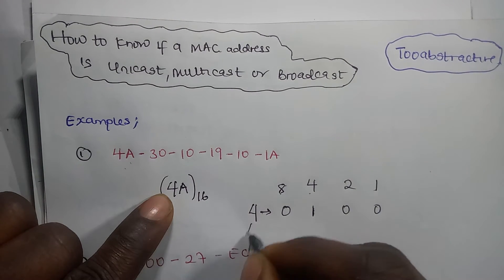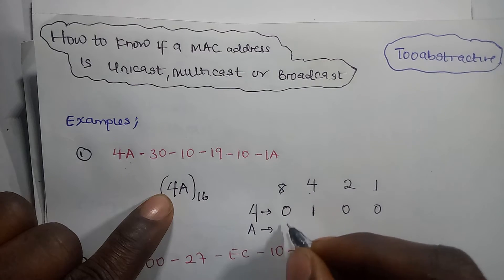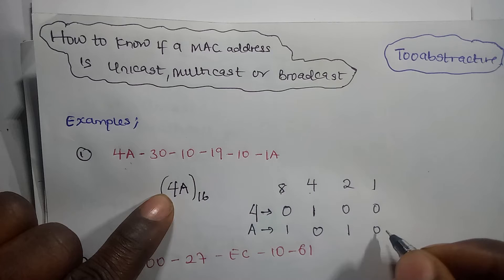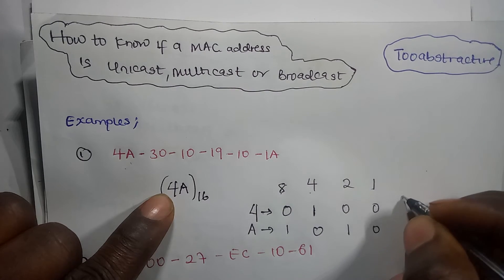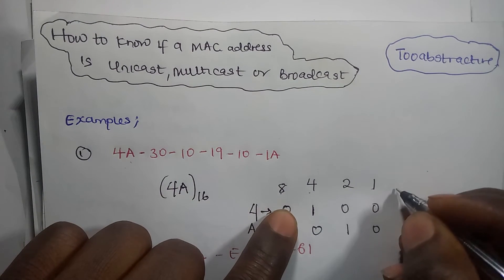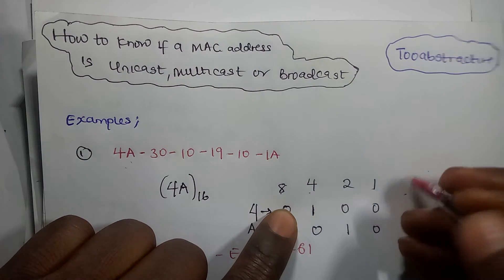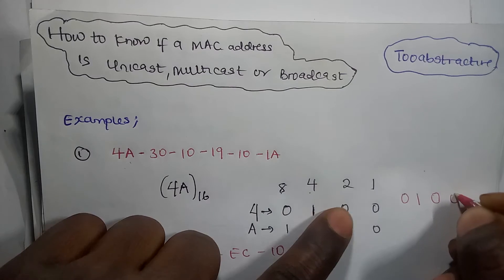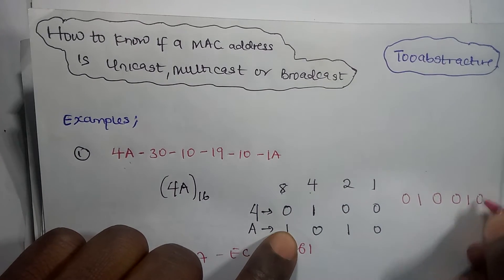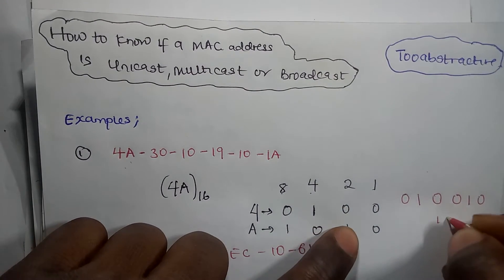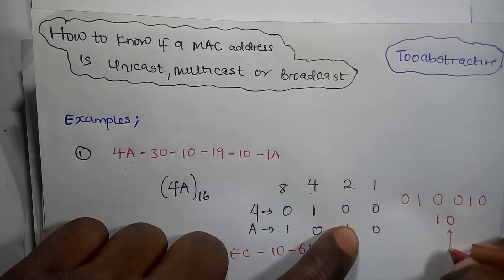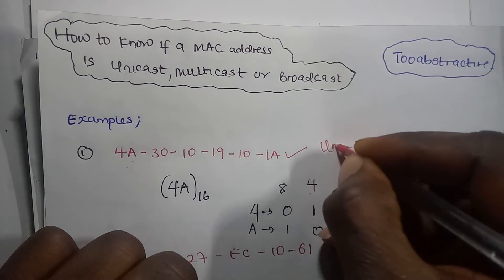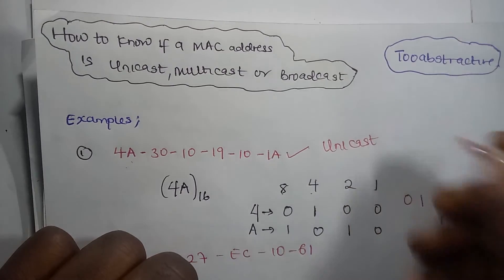The next nibble is A. A is 10, which means we need to switch the 8 and the 2 on, and the rest we switch off. At the end, we have 0, 1, 0, 0, 1, 0, 1, 0. As you can see, it is ending with 0, which means unicast. So this one is actually unicast, as it is ending with 0.